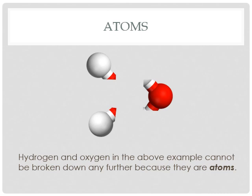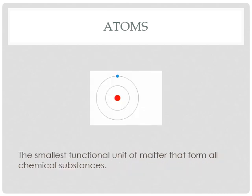So what are these components? First we'll talk about atoms. Atoms are components that can't be broken down any further and retain their properties. They are the smallest functional unit of matter and make up all chemical substances.